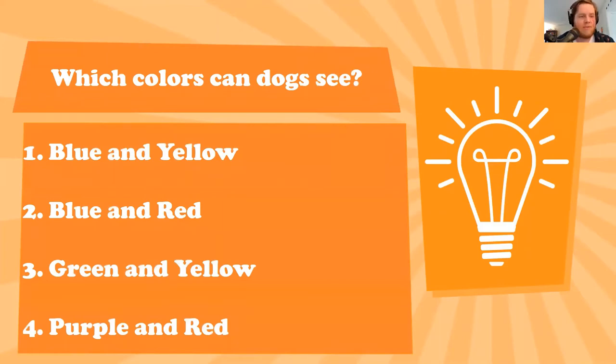So just answer on the poll, or you can just keep track of what you answered at home, if that works better for you. So dogs are capable of seeing two colors based on behavioral tests. So these are the two colors that scientists think dogs can see. Is it blue and yellow, blue and red, green and yellow, or purple and red? And we'll give you just another few seconds on those answers. All righty, we're going to wrap up our voting there.